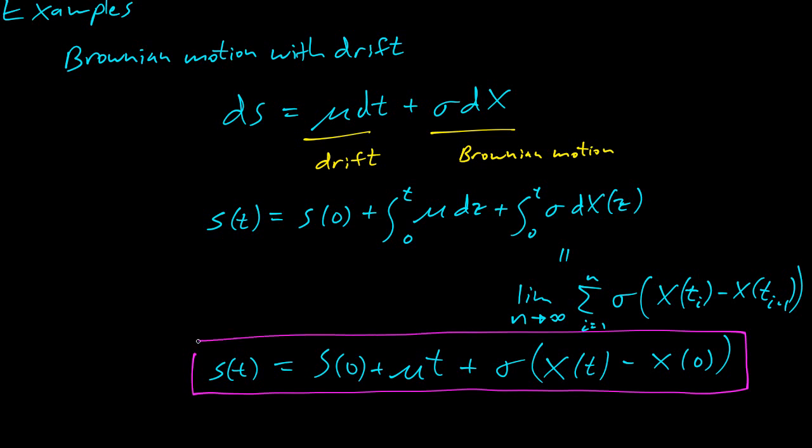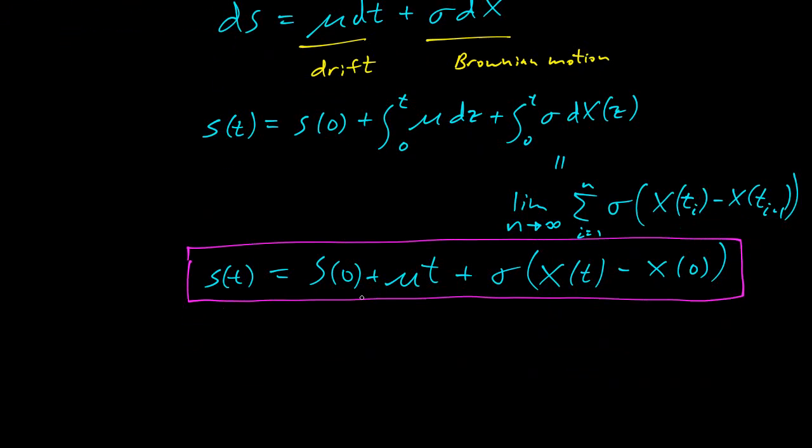Here we actually use the definition of the integrals and we calculated the result. This is the explicit formula for Brownian motion with drift. The starting value, then there's a drift over time, which is just linearly proportional to time. And then however long the motion happened, this volatility will directly add into the Brownian motion there.